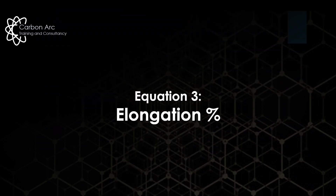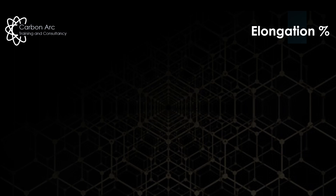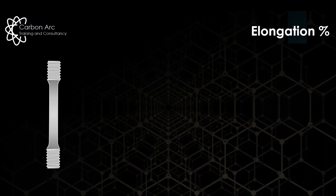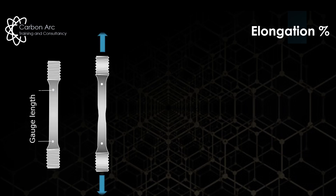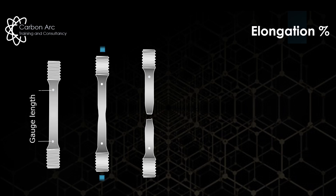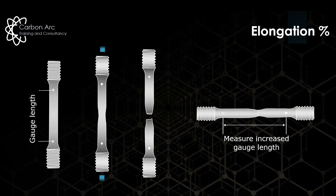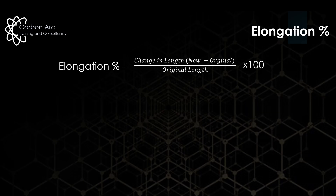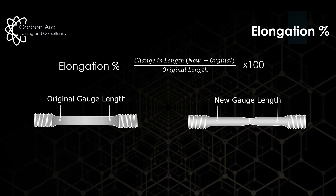Number three is elongation percentage, again tied to our tensile tests. We mark the gauge length on the sample, perform the tensile test until it breaks, then put the sample back together and measure the new gauge length. The equation is: elongation percentage equals the change in length — your new length minus your original length — divided by your original length, multiplied by 100 to make it a percentage.